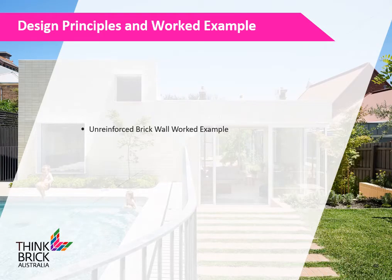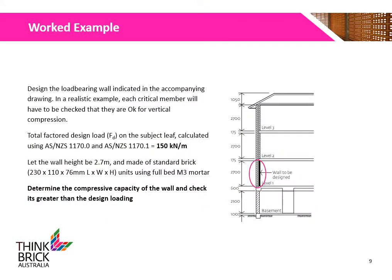We will now go through a worked example for designing an unreinforced brick wall. This example requires us to design a load-bearing wall with a total factored design loading of 150 kN per meter. The wall is 2.7 meters high, made of standard brick units using full-bed M3 mortar. We will determine the compressive capacity of the wall and check whether it is greater than the design loading.